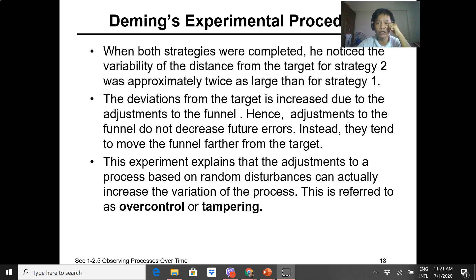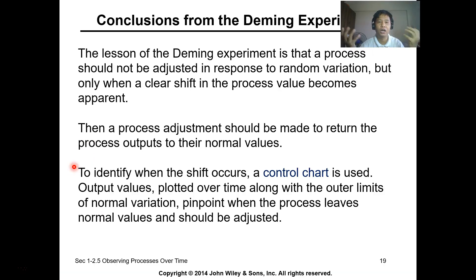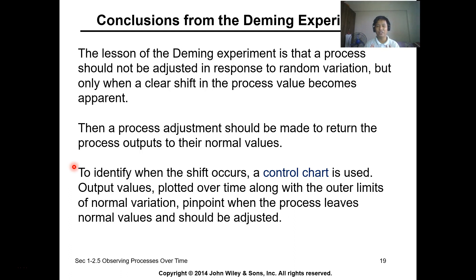This experiment explained that adjustment to a process based on random disturbance increases variation — this is referred to as over-controlling. The lesson from Deming's experiment is that a process should not be adjusted in response to random variation; only when a clear shift in the process value becomes apparent should you adjust. In manufacturing you don't continuously check for variability and adjust, as that would hamper production.